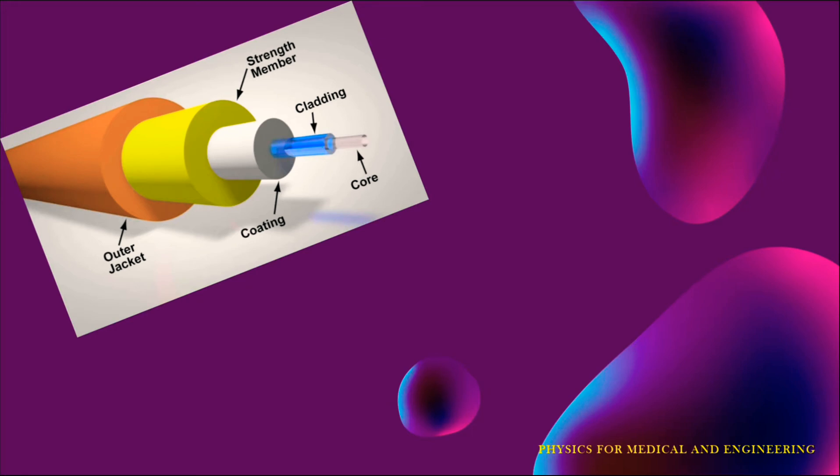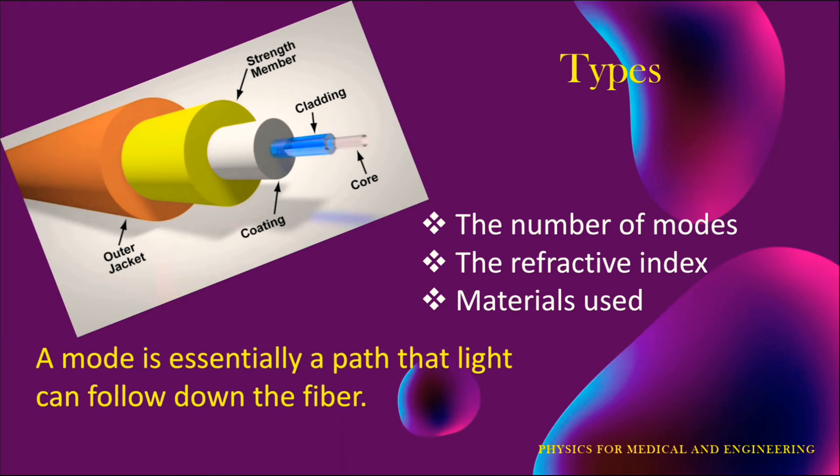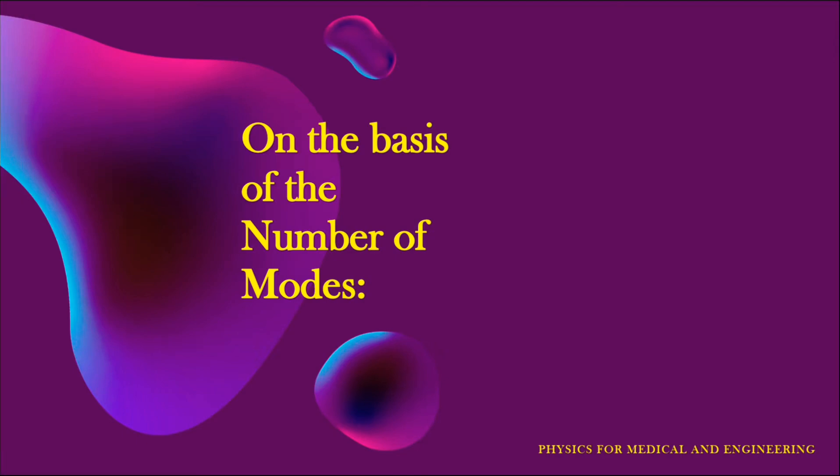Now as mentioned in the earlier video of the optical fibers, the properties of data transmission via a fiber optic depend on the core. Hence based on the difference in the structure of the core, the optical fiber is classified into three categories: the number of modes, the refractive index, and the material used. A mode is essentially a path that light can follow down the fiber of the optical fiber.